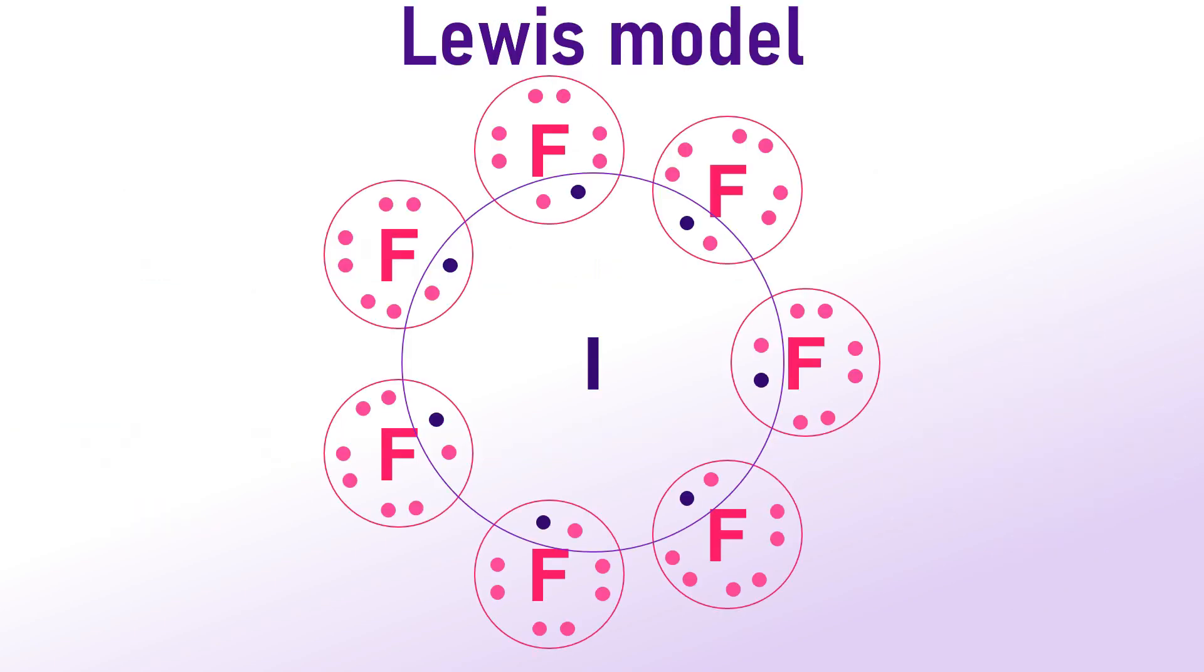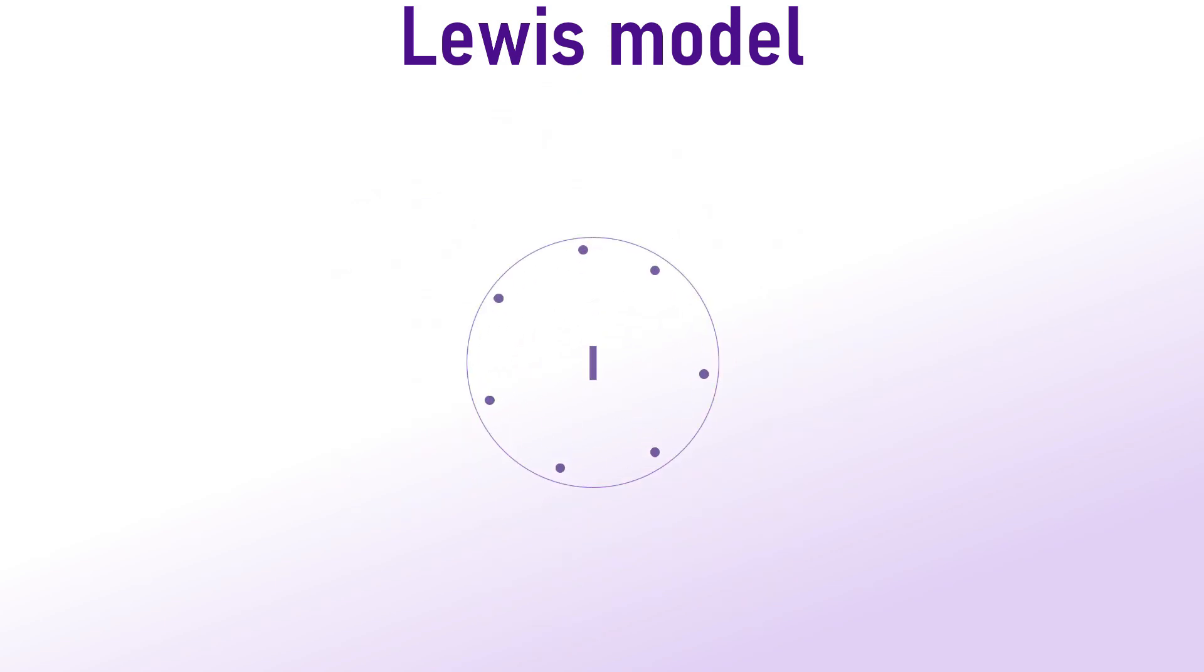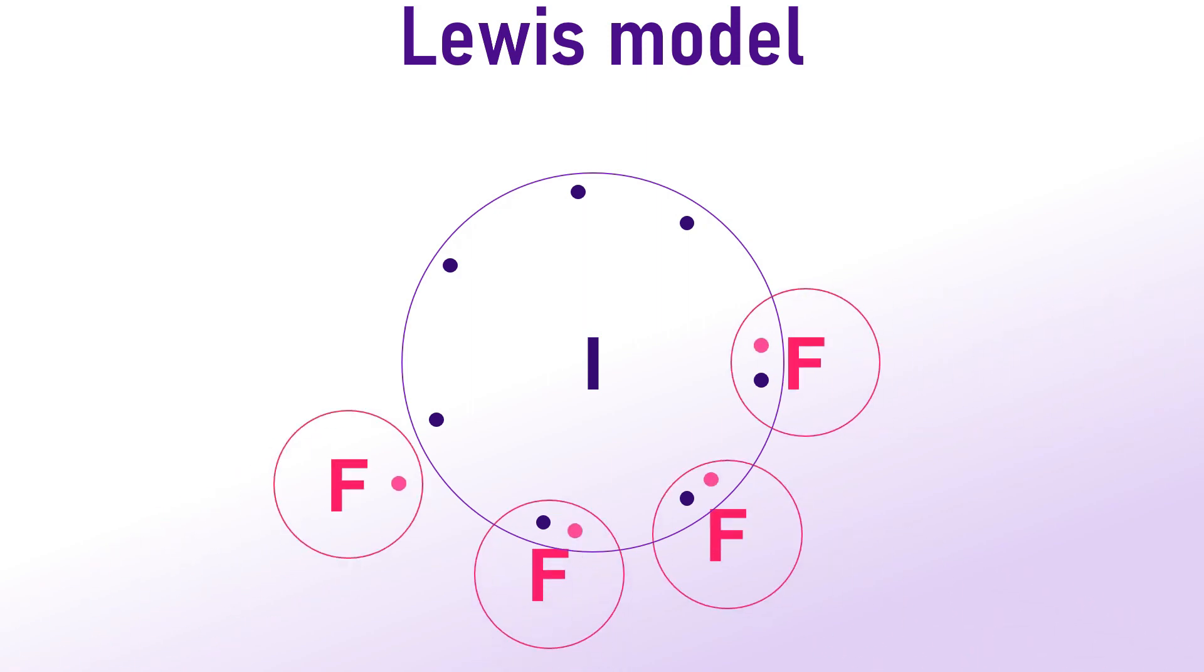Before delving into hybridization, let us analyze the structure of IF7 using the Lewis model. In this molecule, the central atom is Iodine. And it contributes 7 unpaired electrons for bond formation. While each fluorine atom contributes 1 electron, resulting in 7 bonds formed by central Iodine atom.